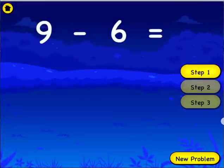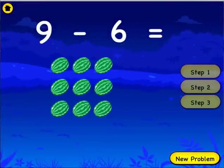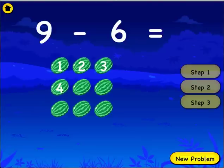What is nine minus six? Count the number of watermelons. One, two, three, four, five, six, seven, eight, nine.